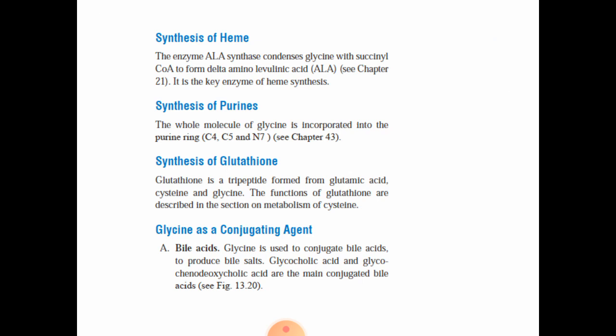Next is the synthesis of glutathione. Glutathione is a tripeptide formed from glutamic acid, cysteine, and glycine. Next, glycine acts as a conjugating agent in bile acids — glycine conjugates bile acids to produce bile salts. Glycocholic acid and glycochenodeoxycholic acid are the main conjugated bile acids.